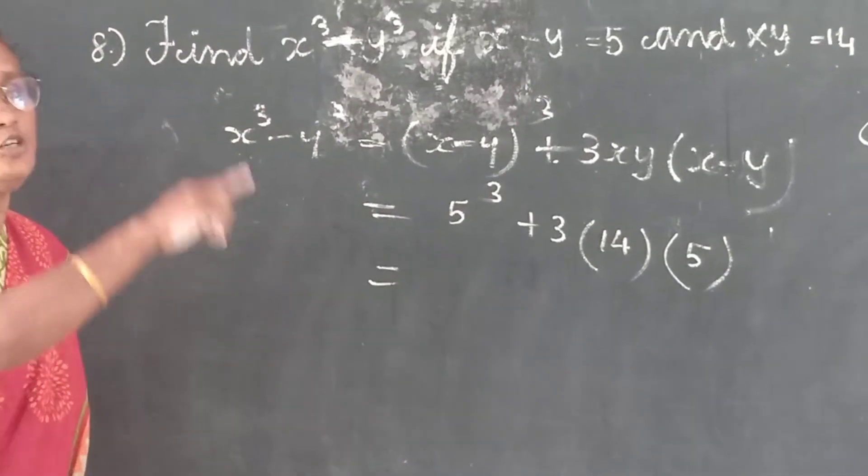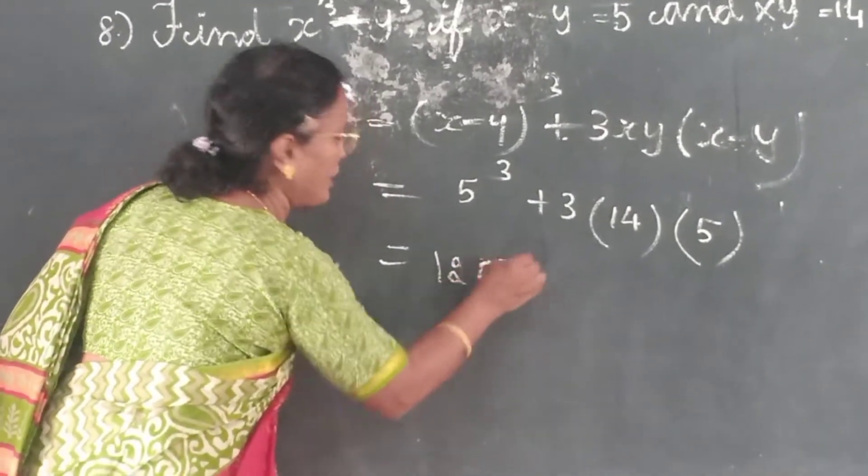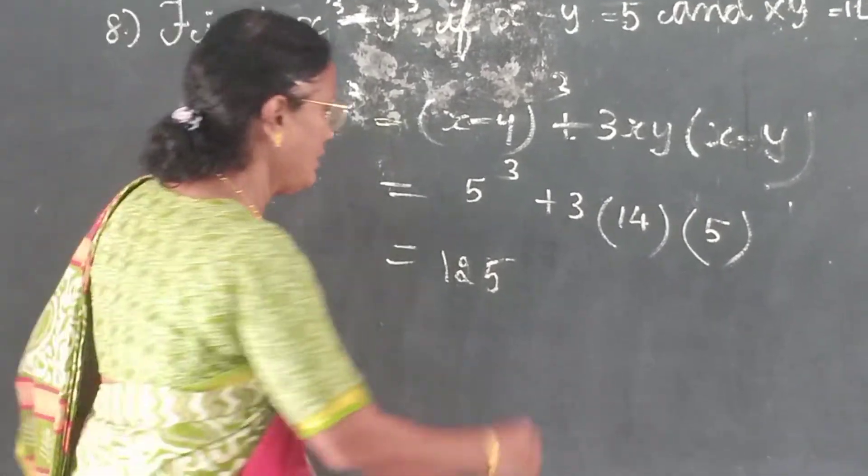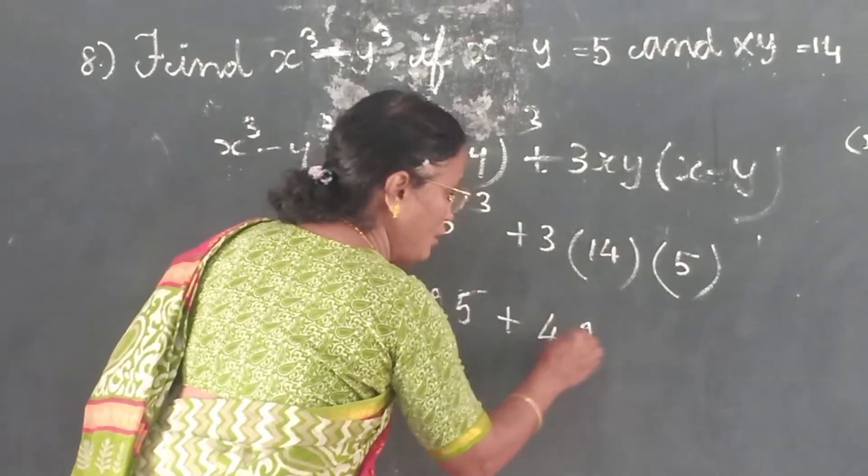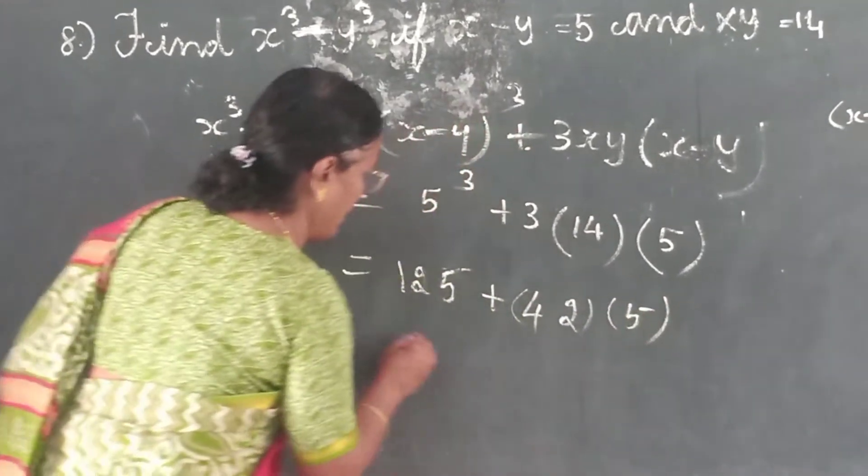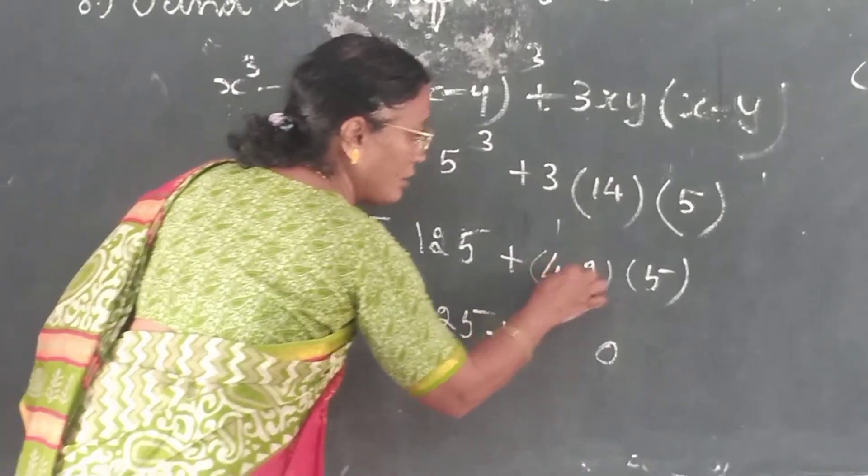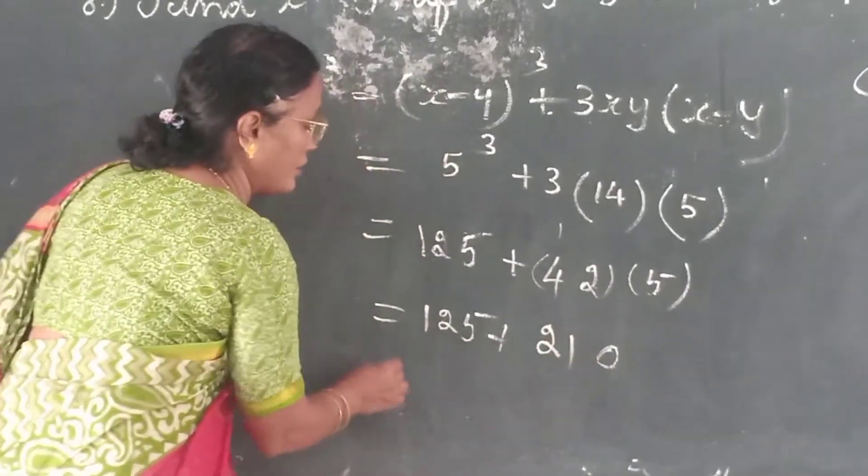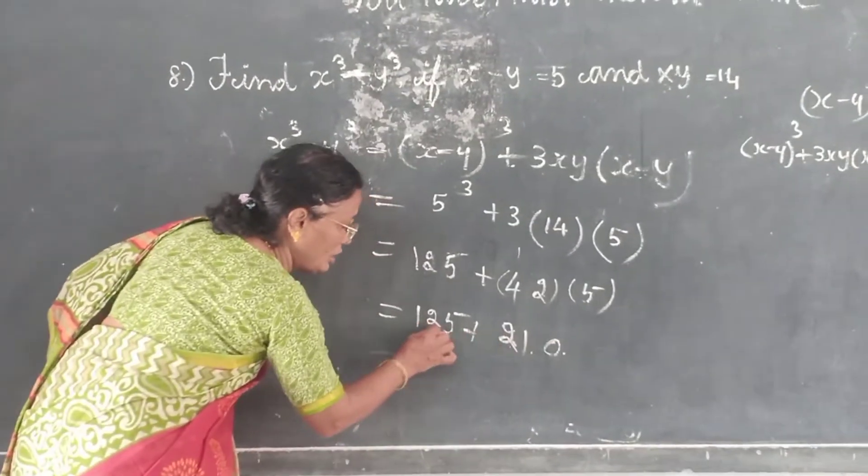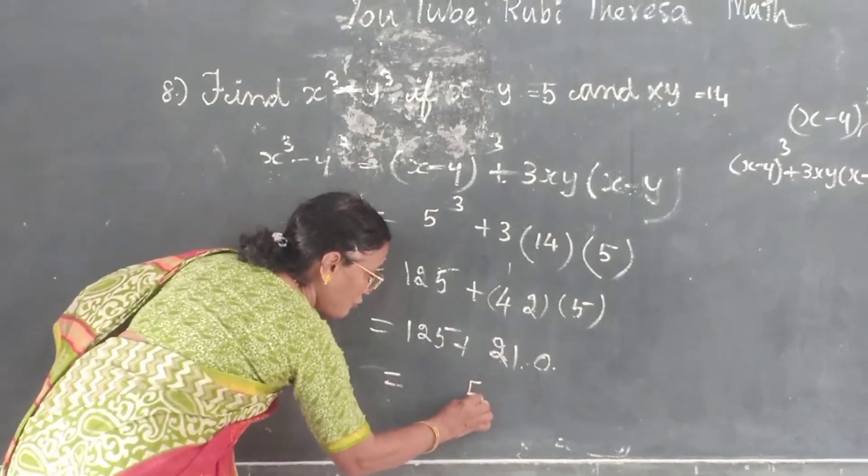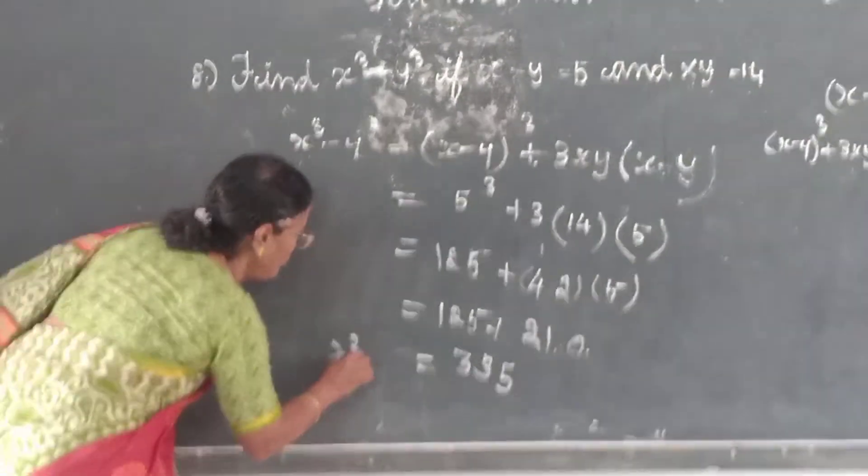5³: 5 into 5 into 5. 5 times 5 is 25, times 5 is 125. Plus 3 times 14 is 42 into 5. So 125 plus 42 times 5: 2 fives are 10, 4 fives are 20 plus 1 is 21. That's 210. 125 plus 210: 0 plus 5 is 5, 1 plus 2 is 3, 2 plus 1 is 3.